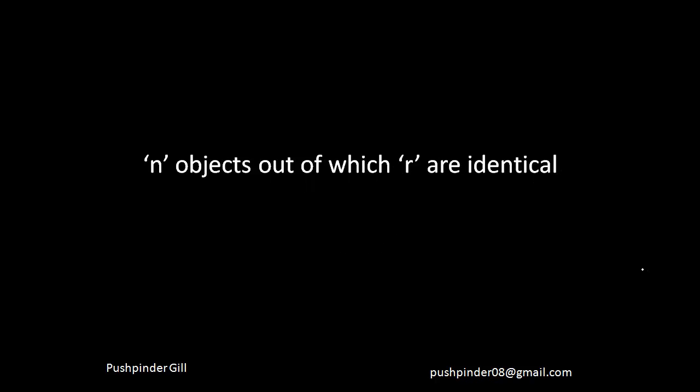If there are n objects and you want to arrange n objects in n ways, the answer is n factorial. However, what if out of those n objects, r objects are identical? This is the point we are going to elaborate today, and a lot of questions which are believed to be very tough can be solved very easily if you understand this point.